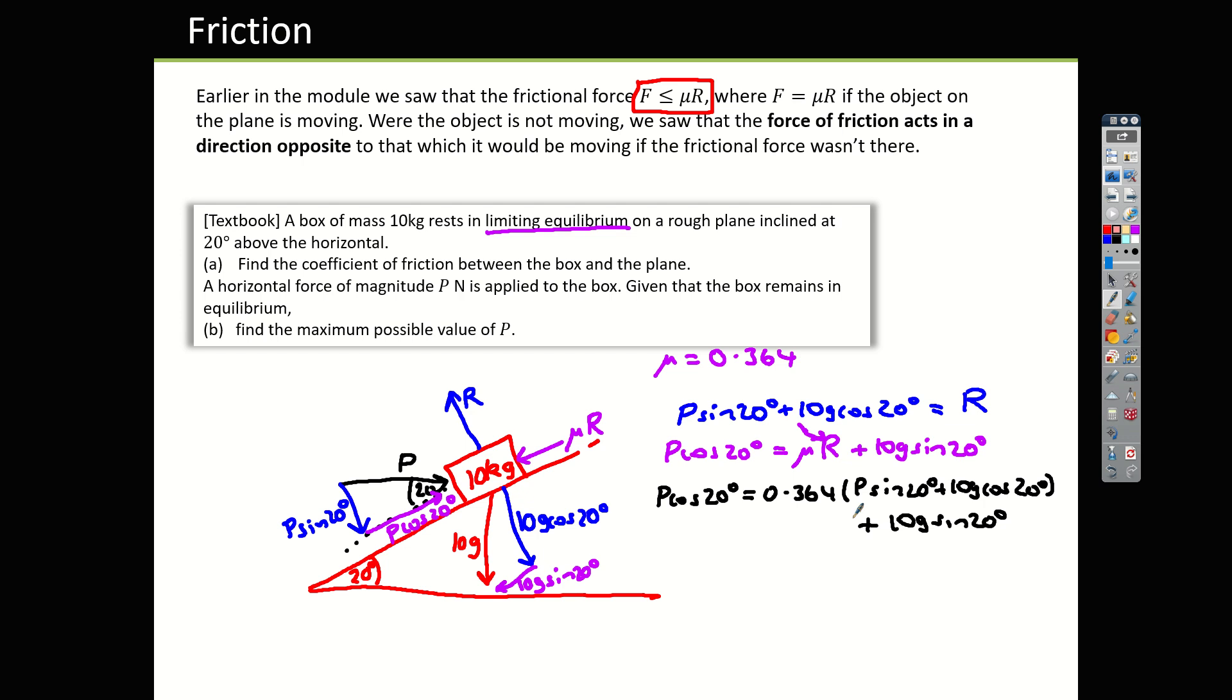So writing the second equation again, P cos 20 is μ 0.364, R is the expression in blue: P sin 20 plus 10g cos 20, plus 10g sin 20 degrees. This is something that I need to then solve for P. P is here and here. So let's think about which side to put things on. I reckon we should put our P terms on the left side, because I think we're going to leave a positive term over here. So if you expand out and tidy up, you're going to end up with P lots of cos 20 minus this term over here, which is 0.364 sin 20.